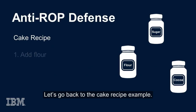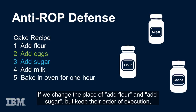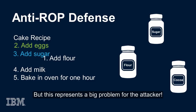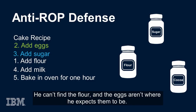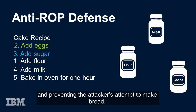Let's go back to the cake recipe example. If we change the place of 'add flour' and 'add sugar,' but keep their order of execution, that makes no difference to us. But this represents a big problem for the attacker. He can't find the flour, and the eggs aren't where he expects them to be. Despite the attack, the regular recipe is followed, producing the desired outcome of cake, and preventing the attacker's attempt to make bread.